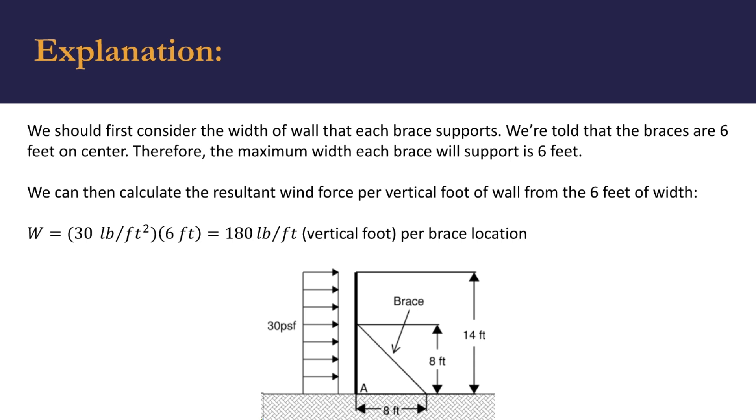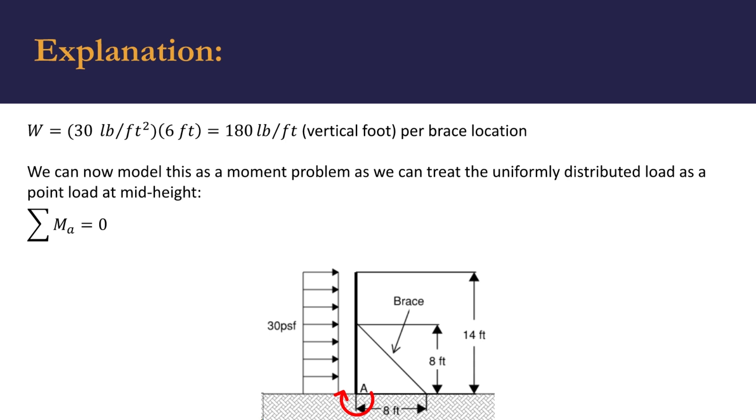We can now model this as a moment problem as we treat the uniformly distributed load as a point load mid-height. So the sum of the moments about point A is going to be zero because we know the wall is static, it's not moving. And this first load, the wind load, is 180 pounds per vertical foot. We multiply this by 14 feet, and then 14 feet divided by 2 because we need to find this at the midpoint of the wall, less the 8 feet times the reaction force R sub X. And this is 8 feet because that's where the brace attaches to the wall.